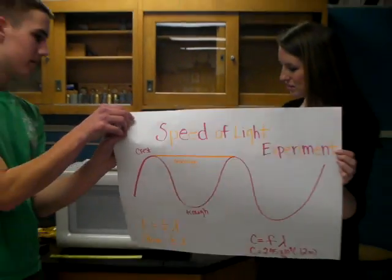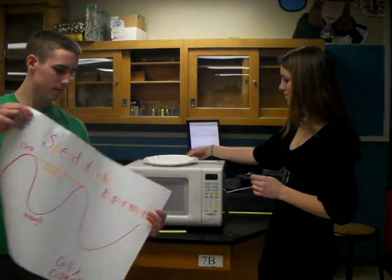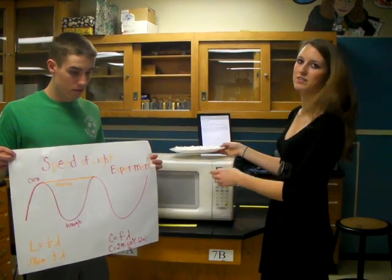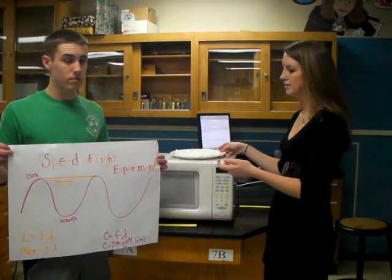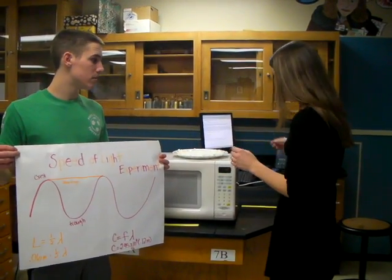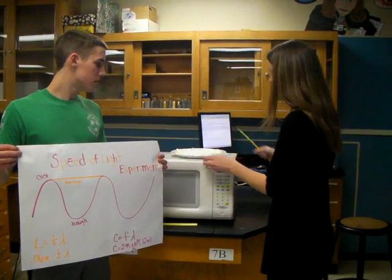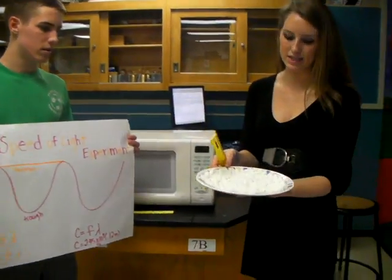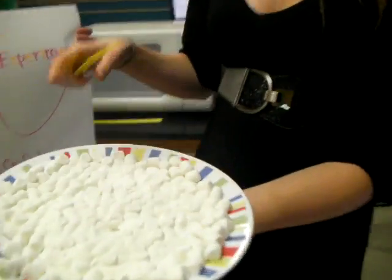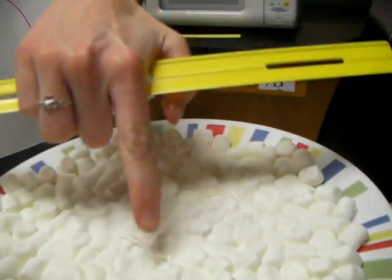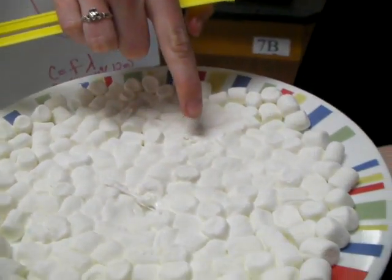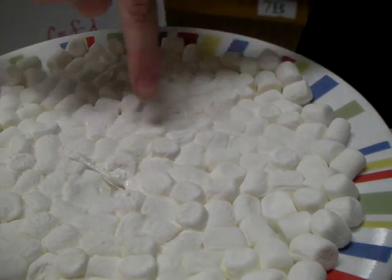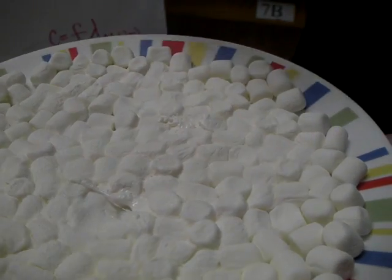So then we put our plate of mini marshmallows into the microwave for about one minute. After you take it out, which we've already done, you can tell that there are distinct spots where the standing wave melted the marshmallows.